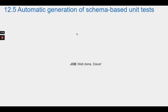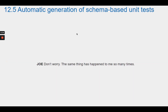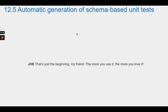Joe congratulates Dave. Dave acknowledges Joe was right: the automatically generated unit tests caught a bug in the implementation of catalog.searchBooksByTitle. Joe says the same thing has happened to him many times. Dave remarks that data validation à la DOP is really cool. Joe says that's just the beginning — the more you use it, the more you love it.